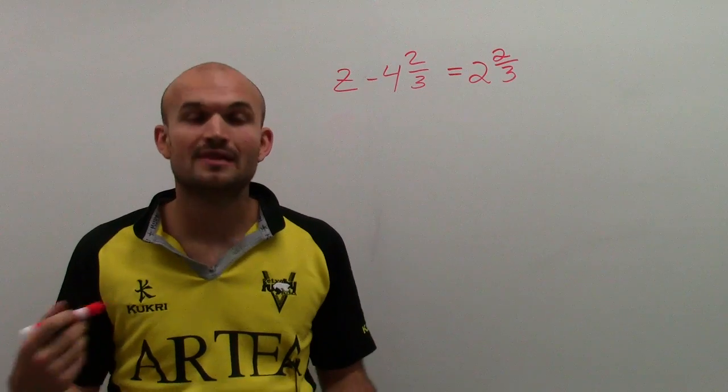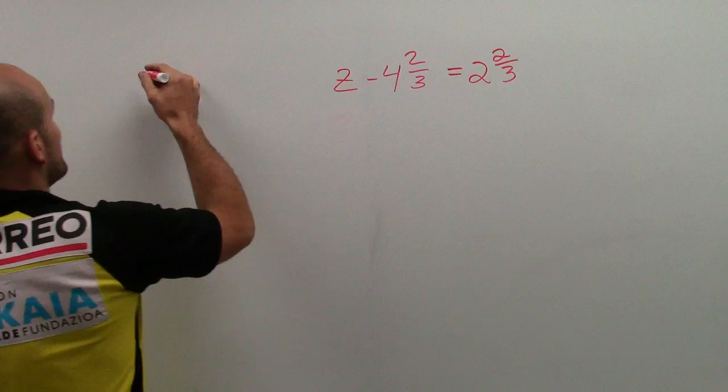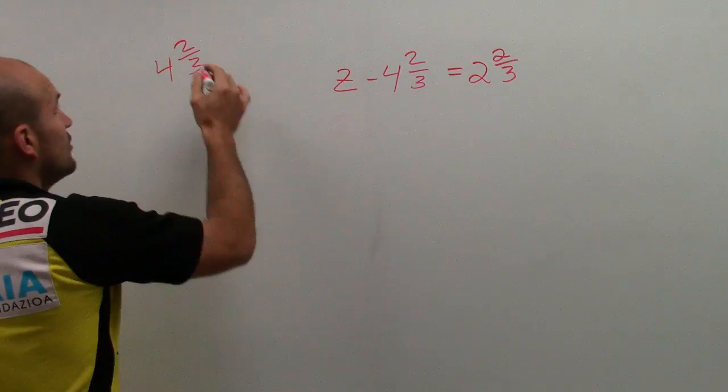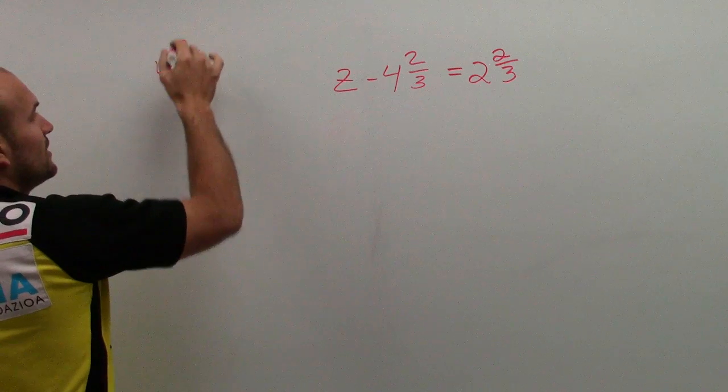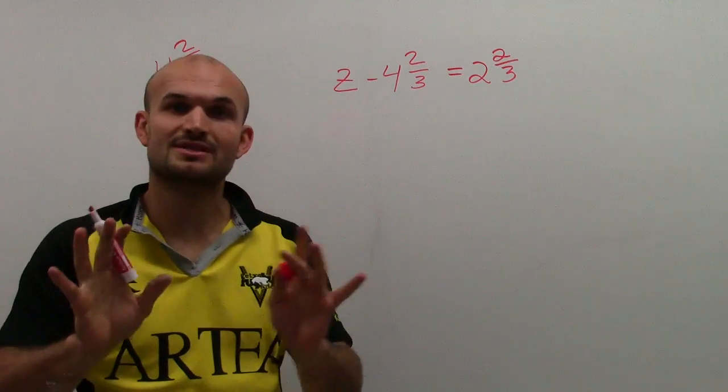If you don't like 4 and 2 thirds, there's a couple things you can do. Convert it to an improper fraction. 4 and 2 thirds: 4 times 3 is 12, 12 plus 2 is 14 thirds. So you can replace it to 14 thirds if you like.